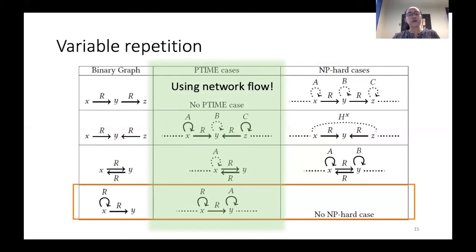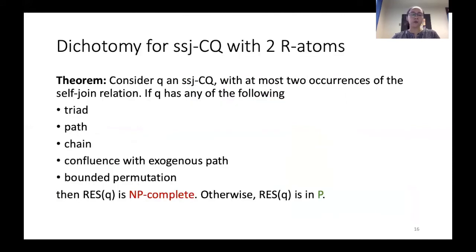These four cases cover all of the possible ones where we have just two R atoms occurring, and remember that we are in the setting of no paths and no triads. With all we have built so far, we are able to define a dichotomy result for this very restrictive class of queries — binary single self-join queries with only two R atoms. If the query presents any of the five structures listed, the resilience is going to be NP-complete; otherwise it is going to be in polynomial time. Even to prove a dichotomy for this very restrictive set of queries, we needed to consider many, many cases.